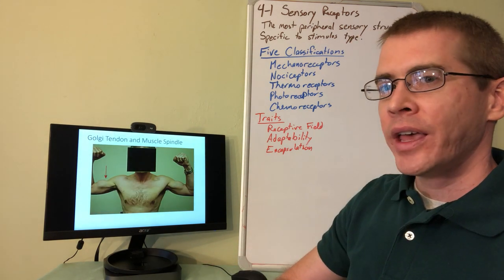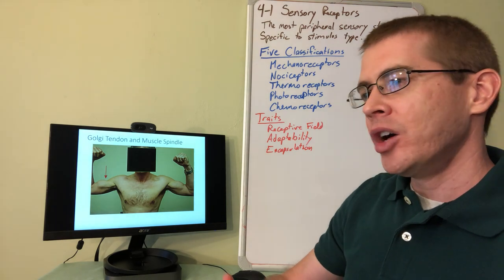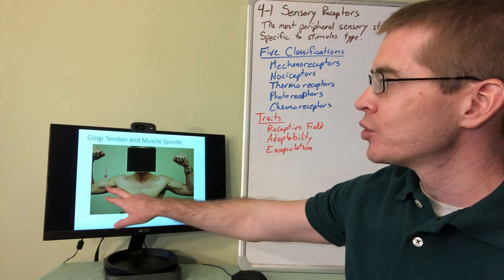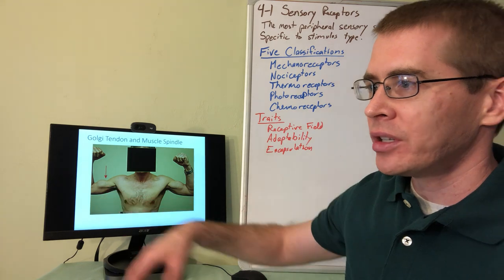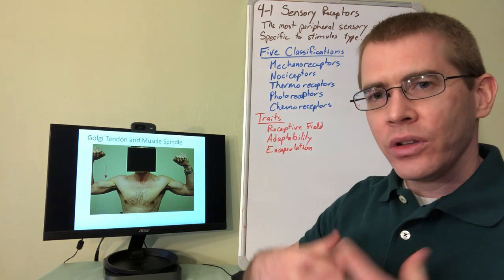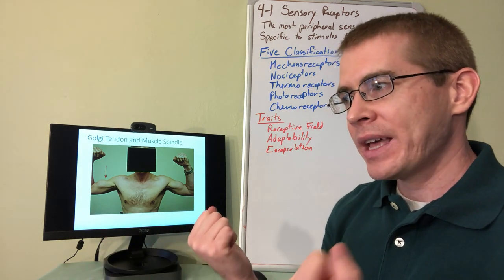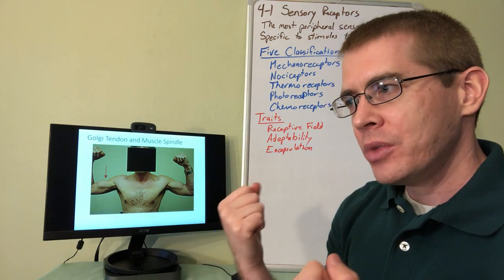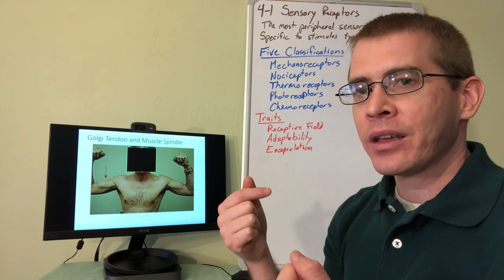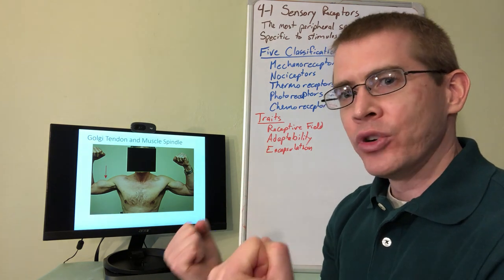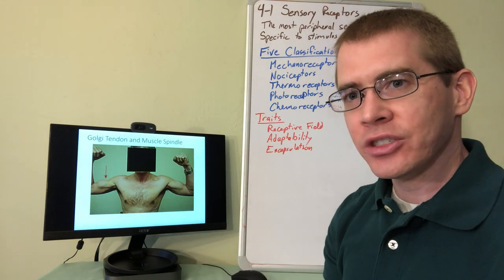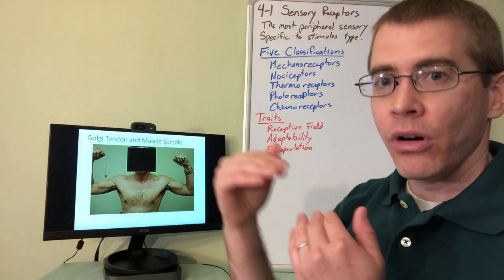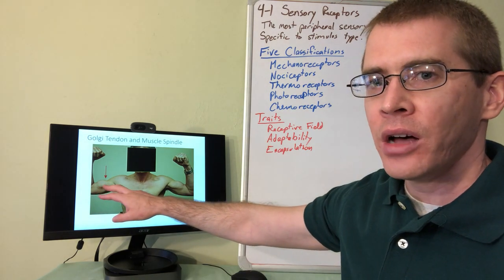The Golgi tendon and muscle spindle receptors help protect our muscles and maintain their strength and tone. Some weightlifters train to overcome the automatic Golgi tendon reflex, bringing their muscles to the envelope more frequently. In some cases they go over the edge, resulting in rupturing of the tendon. This is called the Popeye sign — named after Popeye the sailor man — where the person has ruptured their tendon, resulting in a detached biceps brachii that requires surgical reattachment.